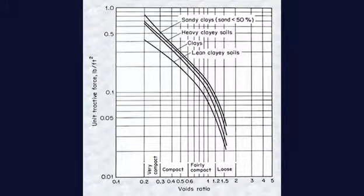This figure shows critical tractive stresses for cohesive materials as a function of voids ratio. Higher voids ratio corresponds to lower critical shear stress, and vice versa.